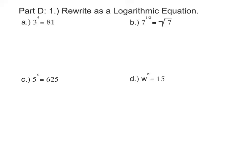So in part A, when it's 3 to the 4th power, the base is 3. So my logarithm is going to be log with a base of 3. Then I'm going to switch the other two, the 4 and the 81. So log base 3 of 81 is equal to 4.